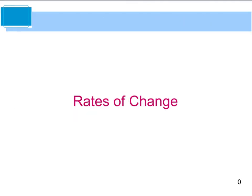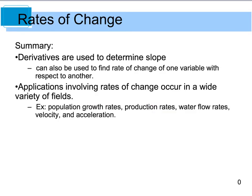Next, we're going to look at rates of change. Derivatives are used to find a slope, and with a slope we can find a rate of change of one variable with respect to another. Applications involving rates of change include growth rates, production rates, water flow rates, velocity, acceleration, and so on.